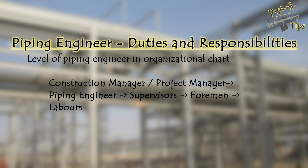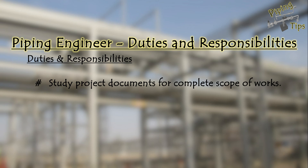These engineers may be working under construction managers or directly under project managers. What are the main duties and responsibilities of a piping engineer — that is what we are discussing today. Again, it depends on the company where you are working and the size of the company especially. In this episode we are just mentioning the titles and main activities. When a piping engineer joins a project, he has to study the project scope and project documents for the complete scope of work — what is to be done in this project and what is the scope of his company.